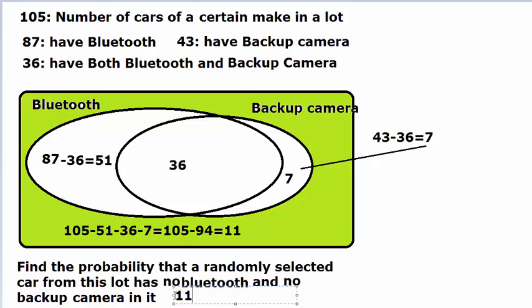So that answer would be 11 over 105 is the probability that a randomly selected car has neither Bluetooth nor a backup camera in it.